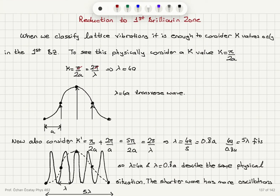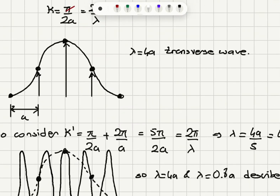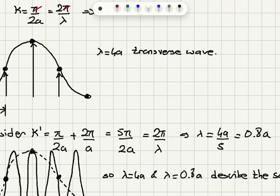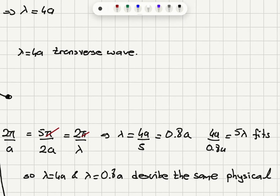Now if we consider π/2a plus 2π/a — that is basically the period of our k-values — π/2a plus 2π/a will give us 5π divided by 2a. That will be equal to 2π over λ. The π's will cancel, and we will find that λ must be equal to 4a over 5, so that's 0.8a.